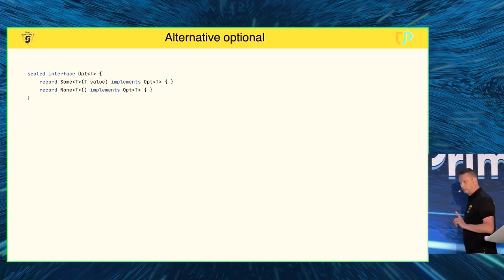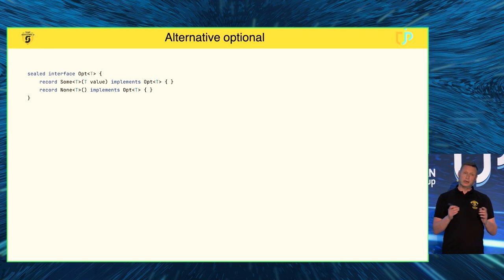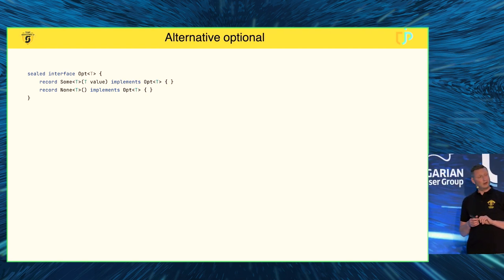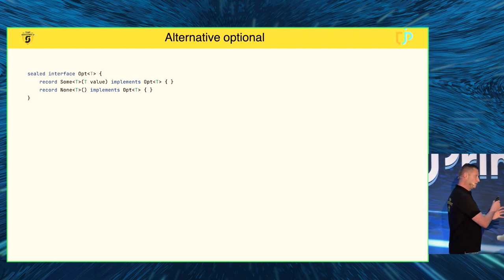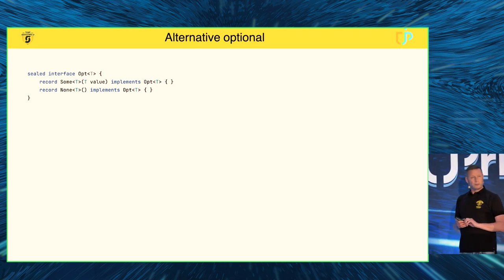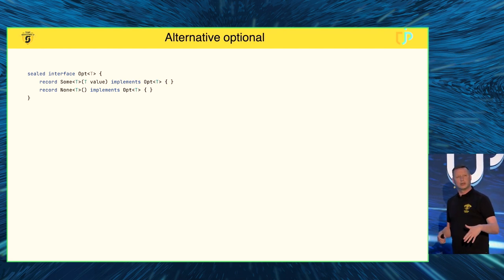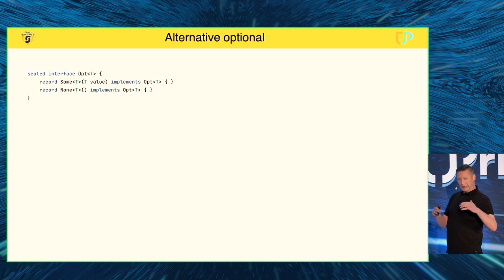We all know the Java Optional class, added in Java 8. You have a variable that might be null or might not — a Schrödinger situation. Until you look into it, you don't know. So you wrap it in an Optional and can ask 'isPresent()' or 'ifPresent()' and provide a method to act on whether the data is null or not.